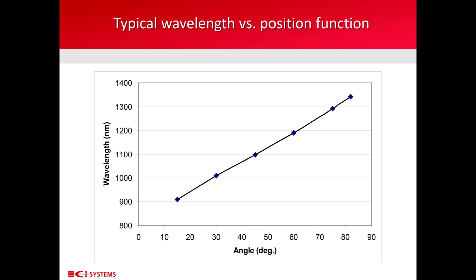This image shows a graph of the center of the peak at each position of the disk as a function of angle all around the circumference of the disk. And from this image, we see that the wavelength of the peak is proportional to the angle that that peak is transmitted at.